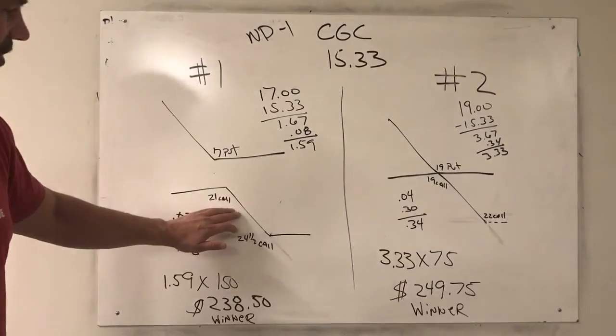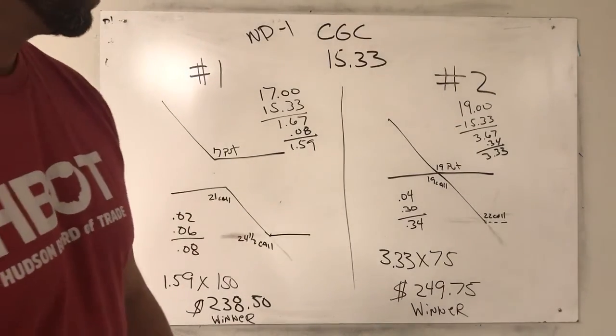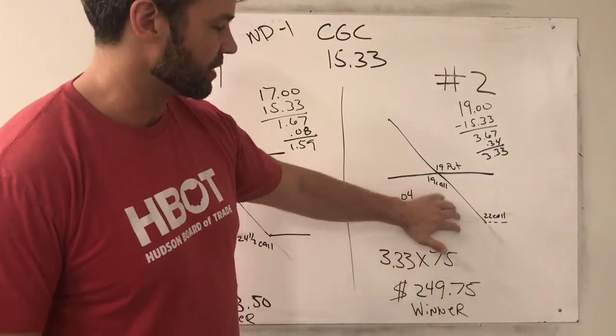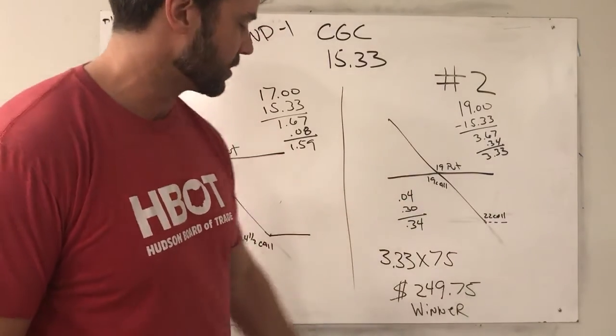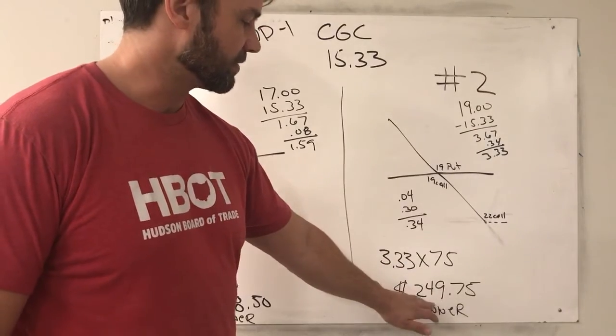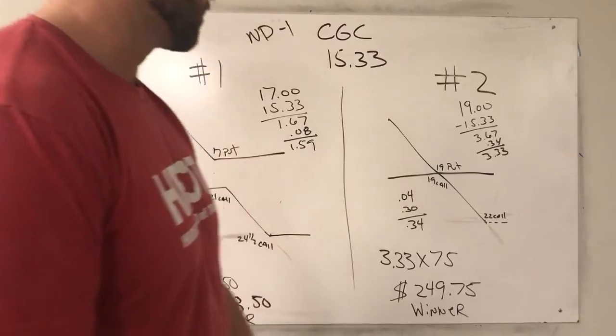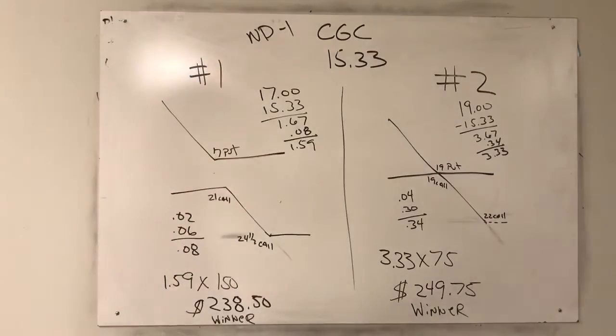And then choice one, we sold the 21, so it would have had to rally before we lost money. So this was a riskier trade, so we did it 75 times. So $3.33 times 75 gives us $249.75. That's a winner also. So pretty indifferent to these trades.